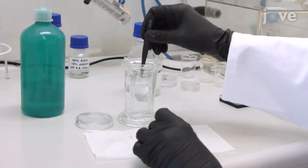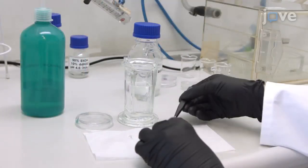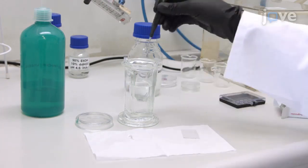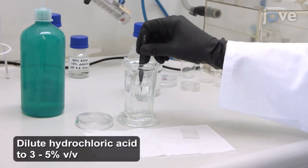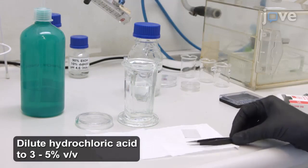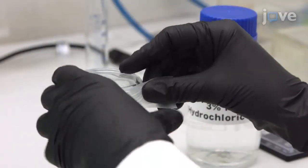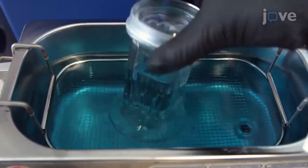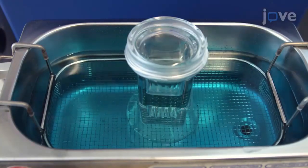Transfer the cleaned slides to a staining jar filled with hydrochloric acid diluted with doubly distilled water. Seal the jar with an appropriate lid and place it in an ultrasonic bath for 90 minutes at room temperature.